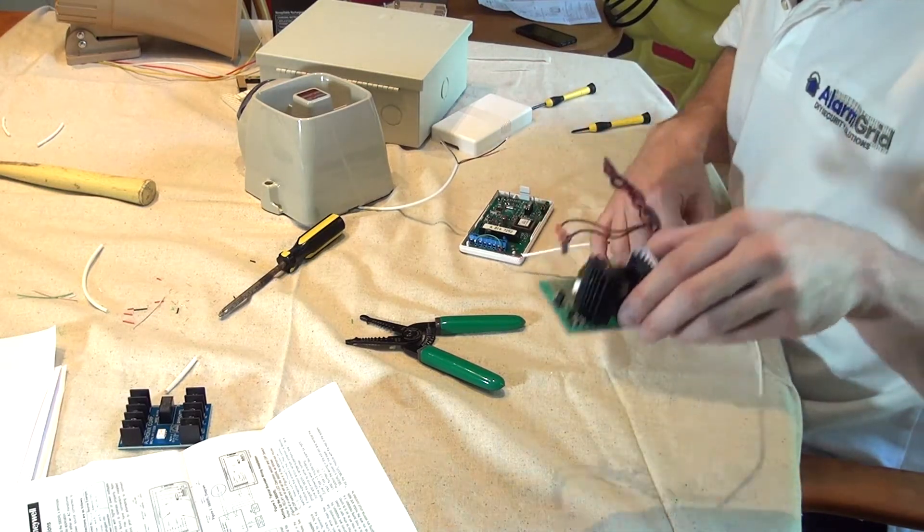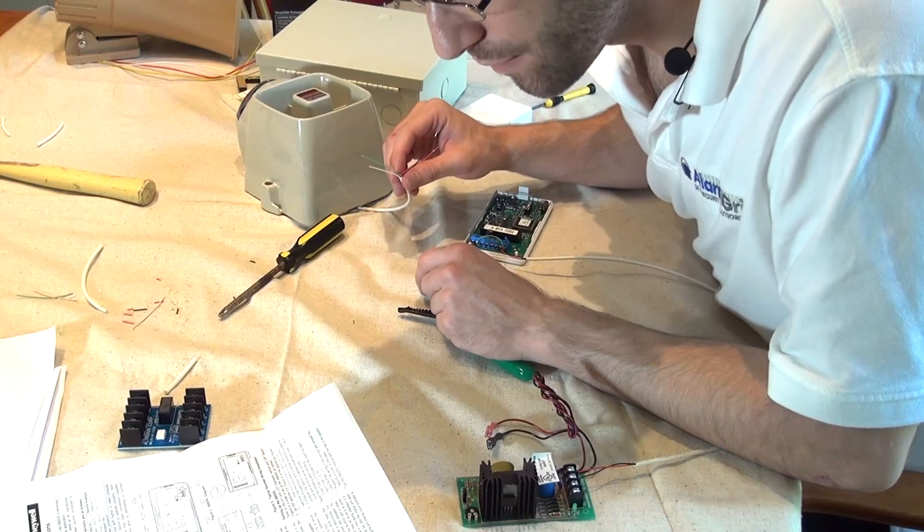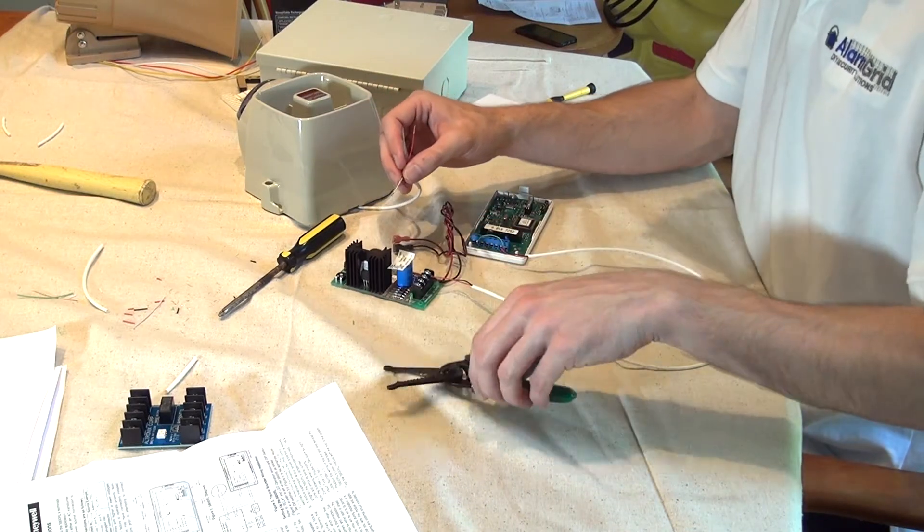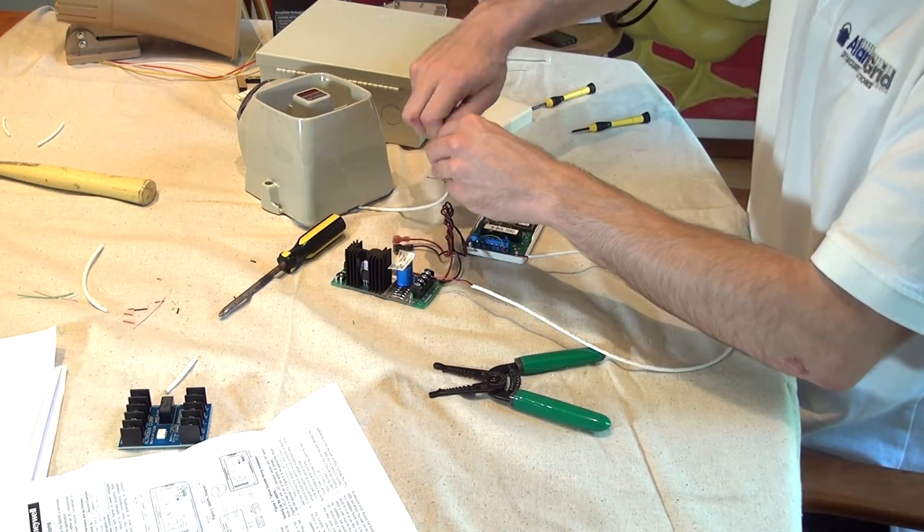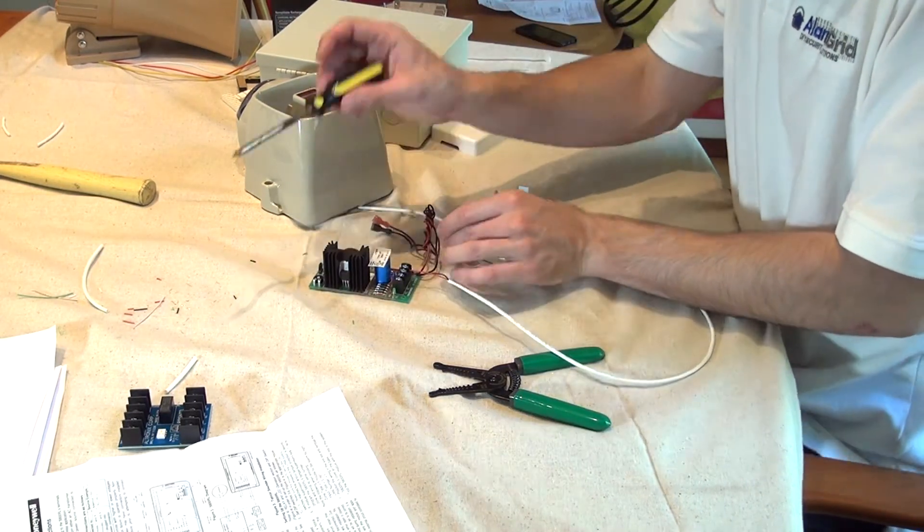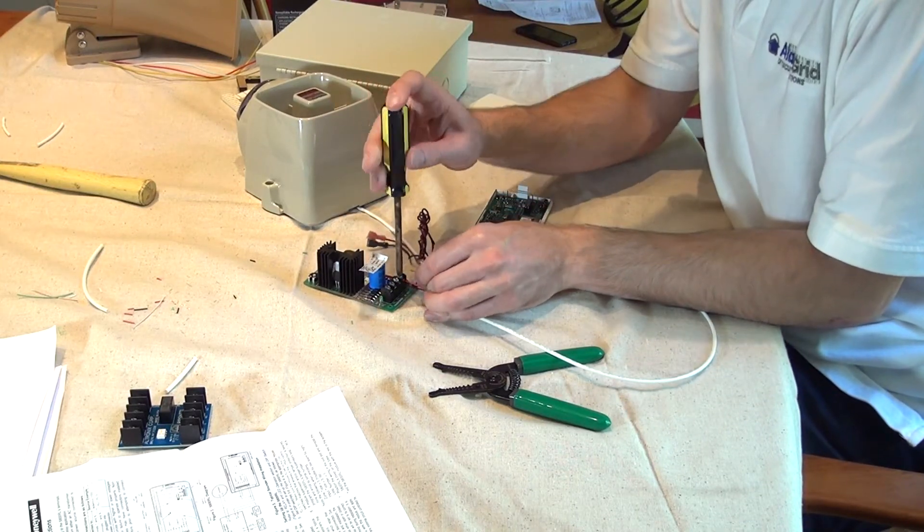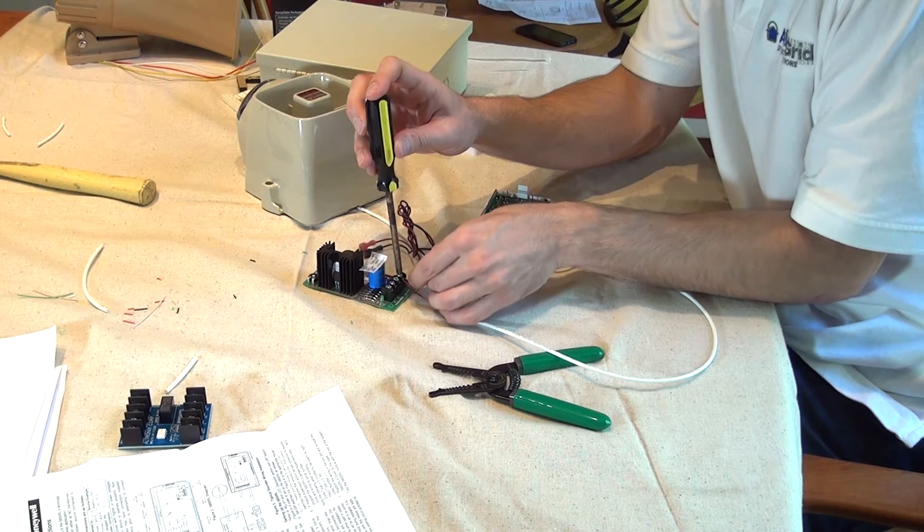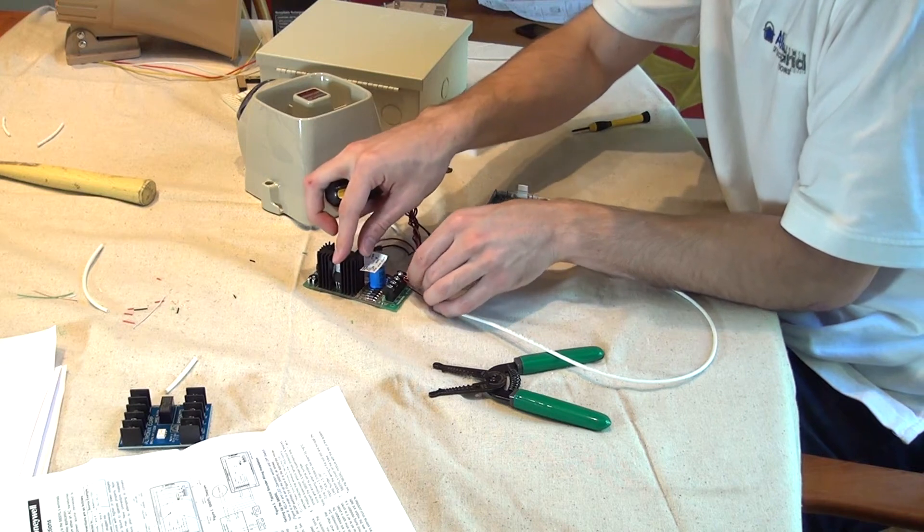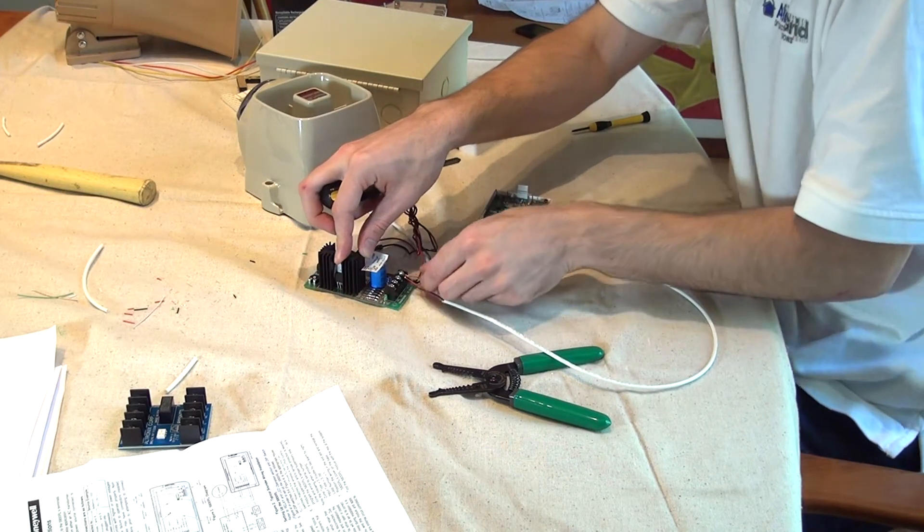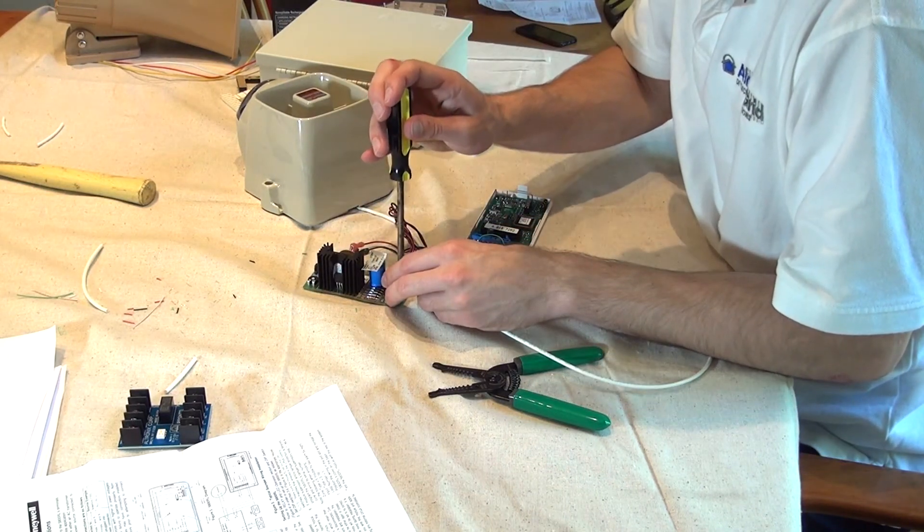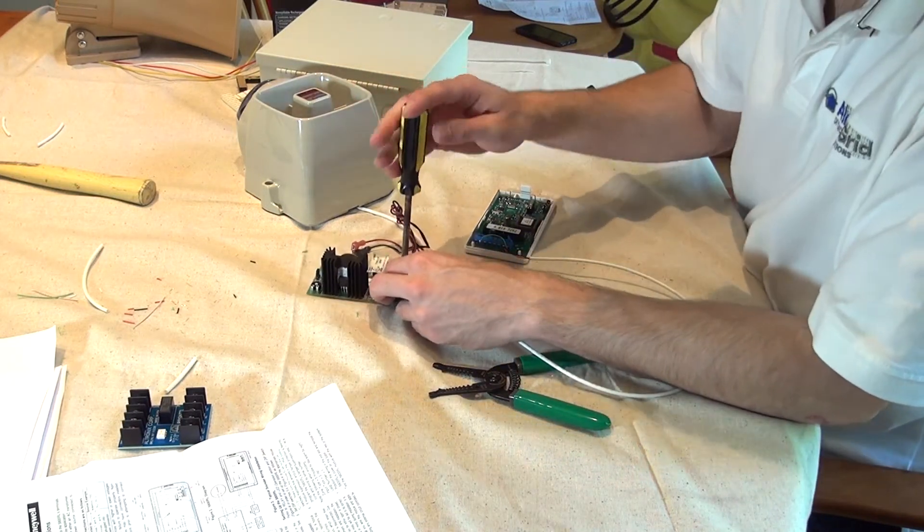These connections, we're going to go positive to our DC output on our power supply. So we're going to twist together the black and the green, and we're going to land it underneath the same terminal that's feeding our DC output to our relay module. So we're going to have three connections going here, screw it down tight. That's our positive side.